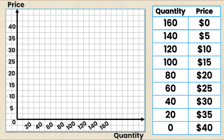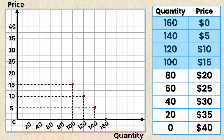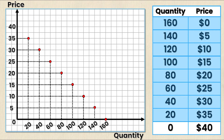Now I need to look at my demand schedule as a series of ordered pairs. The first point is a quantity of 160 and a price of $0. The following point is a quantity of 140 and a price of $5. Then 120 and $10, 115 and $15, 80 and $20, 60 and $25, 40 and $30, 20 and $35, and finally 0 and $40. All of these ordered pairs are simply taken from my demand schedule and then plotted on the graph.